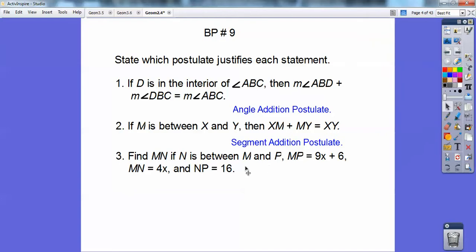So that's what you're going to use on this one. If N is between M and P, and the whole MP equals 9x + 6, and MN equals 4x, and NP equals 16 right there, then you just set up the two small pieces are going to be the big piece. So 4x + 16 equals the entire piece, 9x + 6. You get x equals 2. Typically these aren't x answers. You've got to plug in x into one of them, and they want to find MN, so you're going to plug in 2 right there, so 4 times 2 is 8.